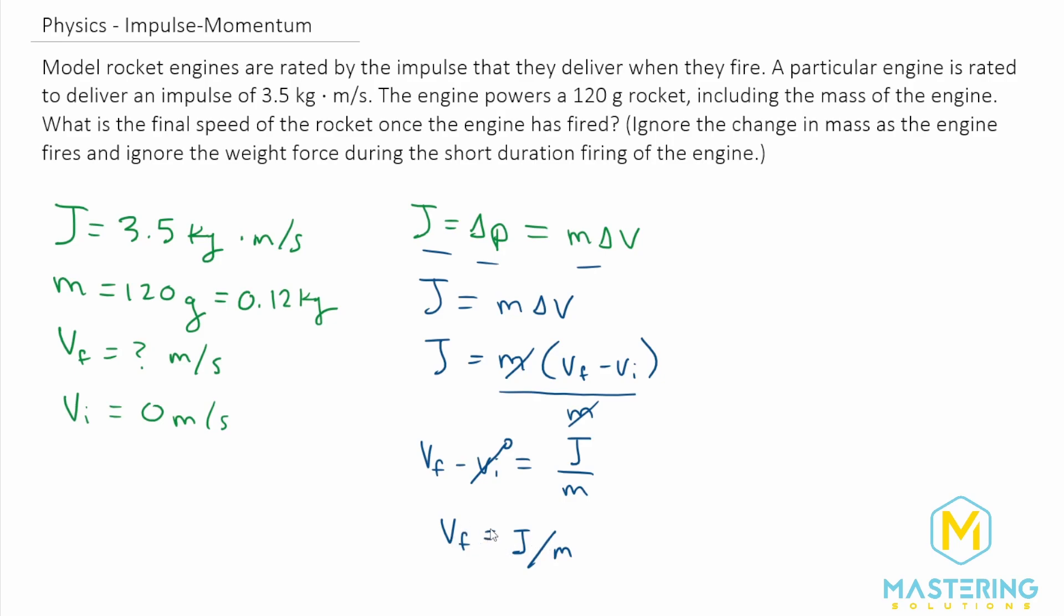So now that we have the equation that we've solved for, let's just plug in our numbers. So V final is going to be equal to J, which we said was 3.5 kilograms times meters per second, divided by the mass, which in SI units is 0.12 kilograms. So now when we look at the units, we know that we need meters per second, and the kilograms will cancel out leaving exactly what we need, meters per second.